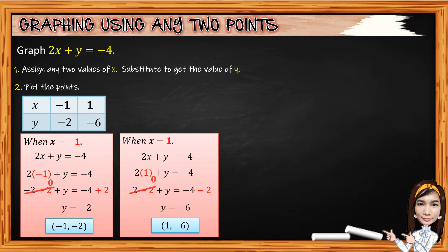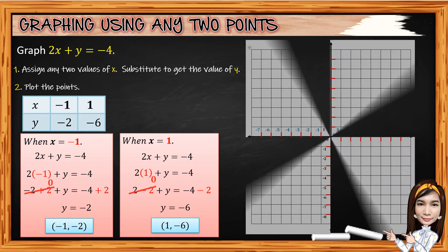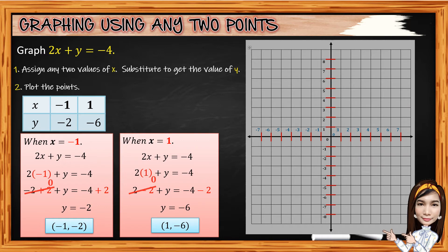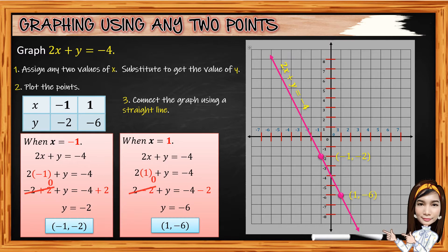For number 2, plot the points. On the Cartesian plane, we plot the first point with coordinates negative 1 comma negative 2, which is located in quadrant 3. Then the second point with coordinates 1 comma negative 6, which is located in quadrant 4. And for the last, connect the graph using a straight line. So we have the graph of 2x plus y equals negative 4.